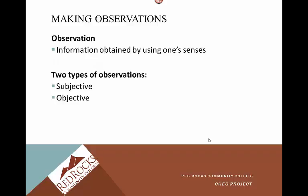Observation is information obtained by using one's senses, and there are two types. Subjective information is the patient's own statement or complaint — for example, 'I have pain in my stomach' or 'I feel sick.' Objective information is factual or measurable — for example, blood pressure readings or urine output, where we get an actual measurement. Both types are important to forming a good picture of the patient's health, but they represent two different ways of gathering information.